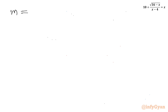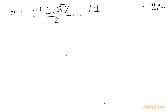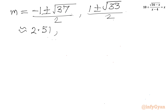Now I will write all four solutions. m equals (minus 1 plus or minus square root of 37) over 2, and (1 plus or minus square root of 33) over 2. The approximate values are: with the plus sign we get approximately 2.51, with the minus sign approximately minus 3.51. For (1 plus square root of 33) over 2 we get approximately 3.4, and for (1 minus square root of 33) over 2 we get approximately minus 2.4.